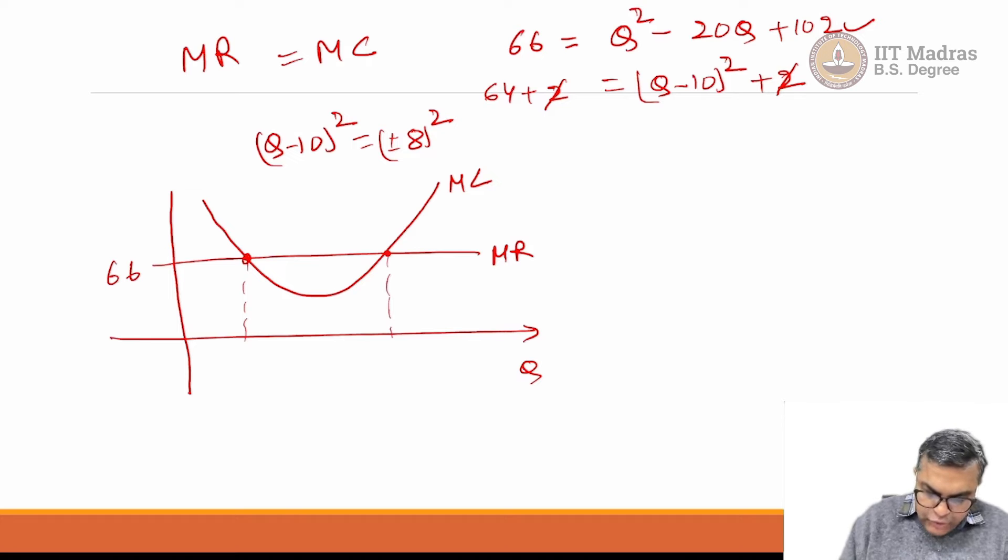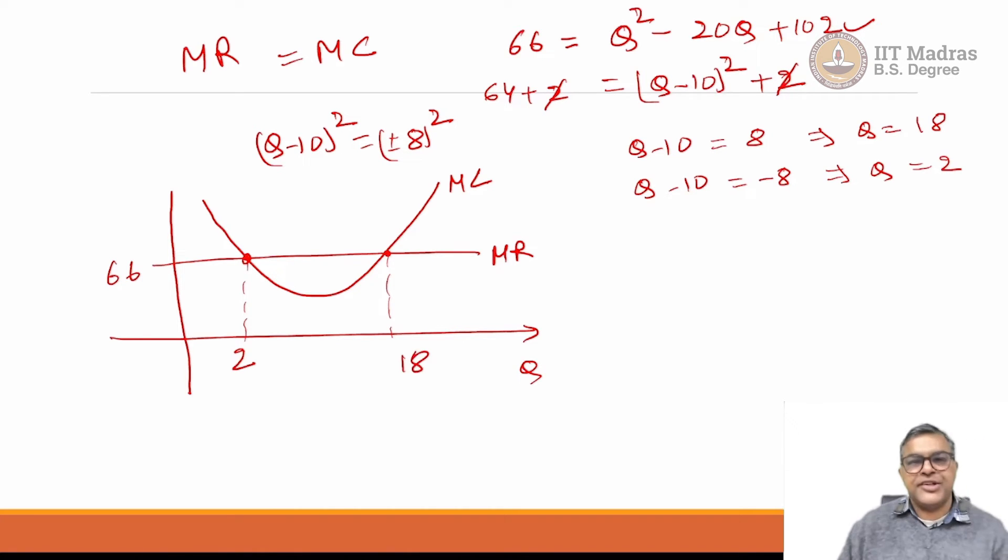We can obtain the value also: if q minus 10 is equal to either 8 or q minus 10 is equal to minus 8, both are possible. From here q is going to be equal to 18, and from here q is going to be equal to 2. This is 2 and this is 18.